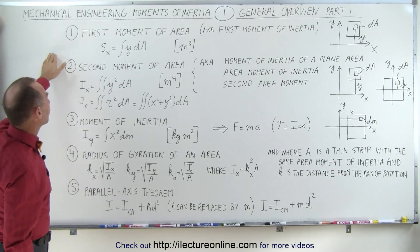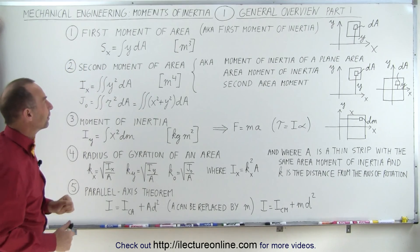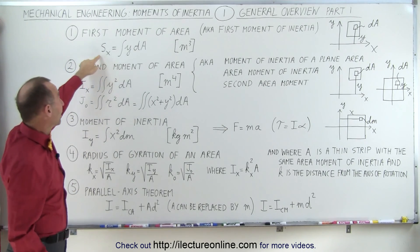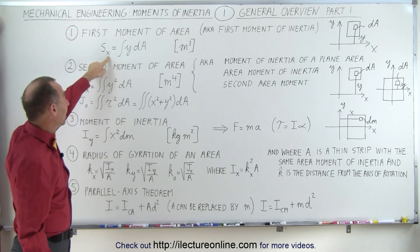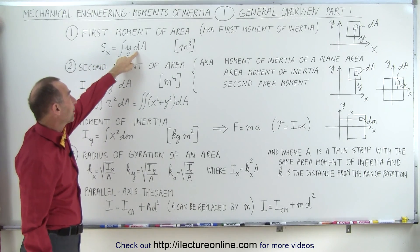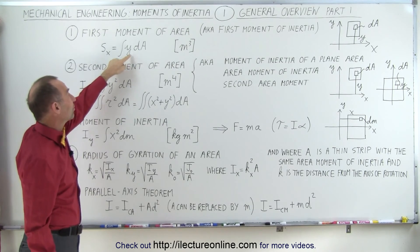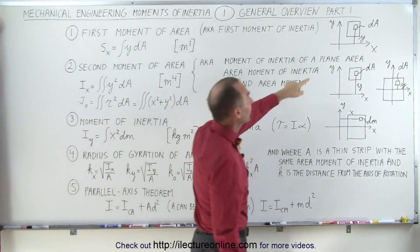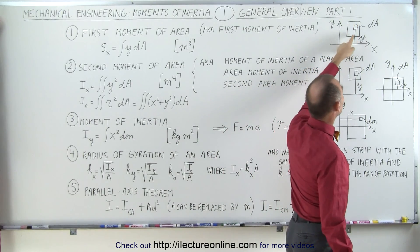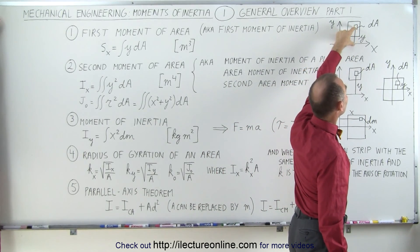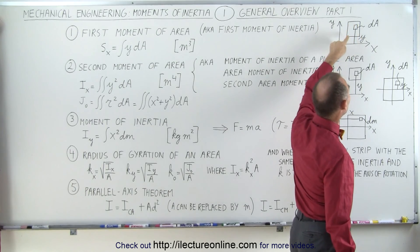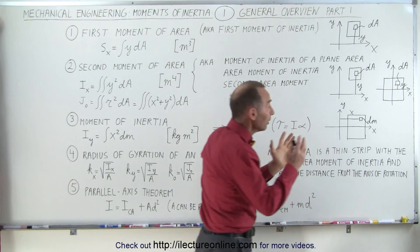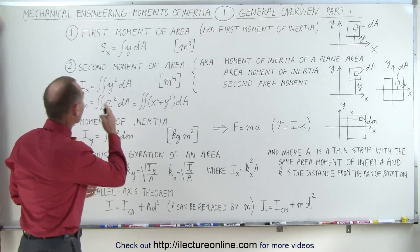So the first thing we're going to talk about is what we call the first moment of area, which means it's relative to an axis. In this case, the example here is to the x-axis, and we integrate the distance of a small area element from the x-axis times that area element. Here's an example: we have a small area element dA and a distance from the x-axis, so when we integrate the product of that distance times the area element over the area, then we get what we call the first moment of area.